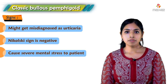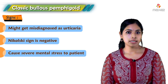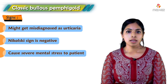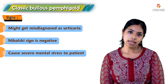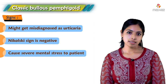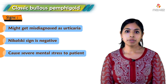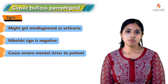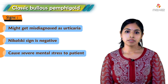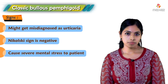If left untreated, bullous pemphigoid has a chronic remitting and relapsing course. Even though the mortality of bullous pemphigoid is low, it is associated with severe morbidity. The treatment is the same as in pemphigus — we treat with corticosteroids and immunosuppressants.